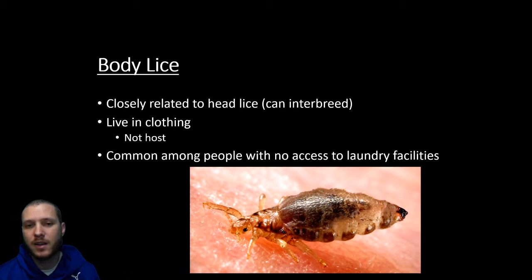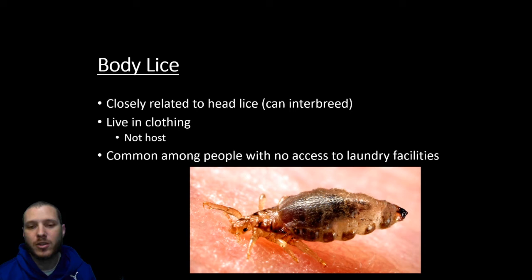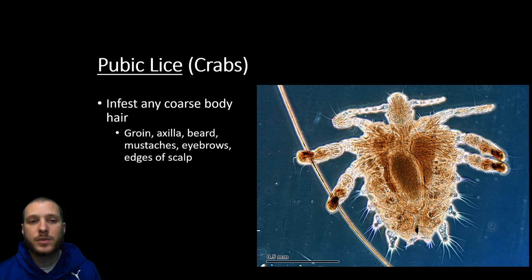Similar to head lice, we have body lice — closely related, they can interbreed, but they only live in clothing, not on the host. You'll find them in the seams of jeans or a jacket. It's more common among people with little to no access to laundry facilities, so as long as you're washing your clothes normally, body lice isn't quite as common.